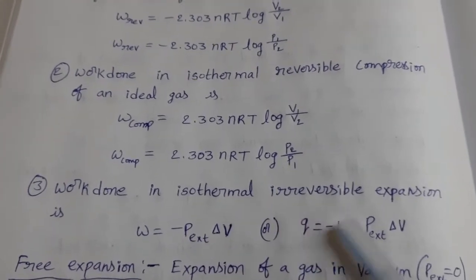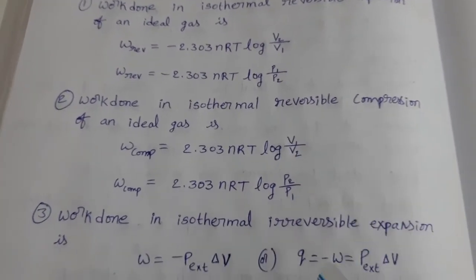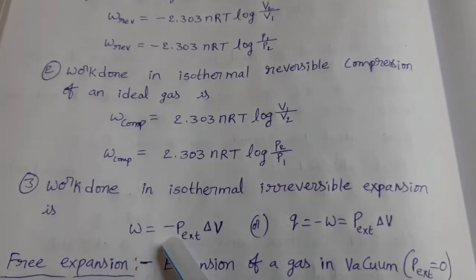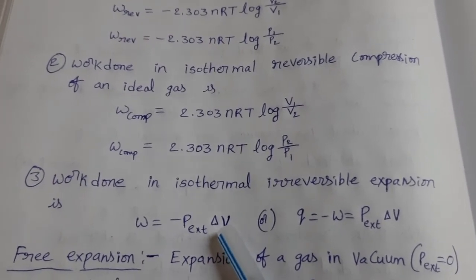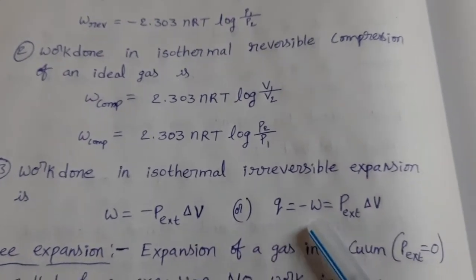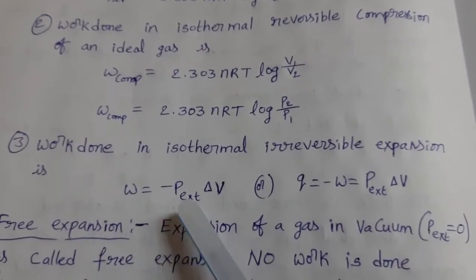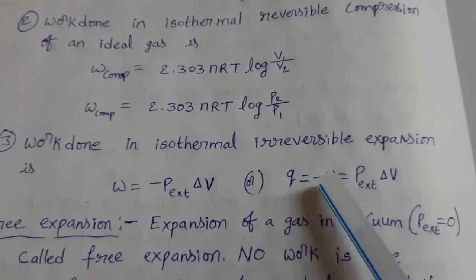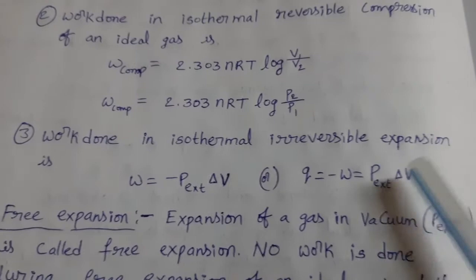Work done in isothermal irreversible expansion. The above two were reversible expansion and reversible compression; here for irreversible expansion, work done W equals minus P_external into delta V. We already know delta V is the difference between final volume and initial volume. Since W has a minus sign, and heat Q equals minus P_external into delta V, the signs work out to give P_external into delta V.